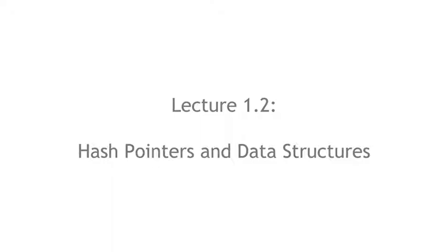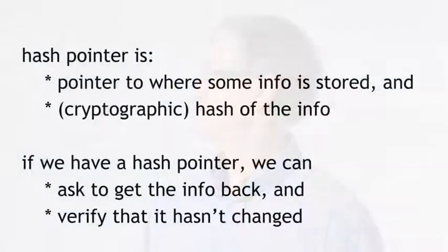In section 1.2, we're going to talk about hash pointers and their application. A hash pointer is a kind of data structure that is used a lot in the systems we're talking about. Basically, it takes a pointer to where some information is stored, together with a cryptographic hash of that information. Whereas a regular pointer gives you a way to retrieve the information, a hash pointer lets us retrieve the information and also verify that it hasn't changed. So a hash pointer tells us where something is and what its value was.